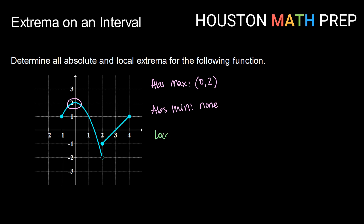Now taking on local extrema — looking for a local max, or maybe more than one, and a local minimum, or maybe more than one. For a local max, we're looking for top of a hill. We have that here — our absolute max is also a local max, so at (0, 2). For a local min, we're looking for the bottom of a valley. I do not see that here, so we have no local minimums.